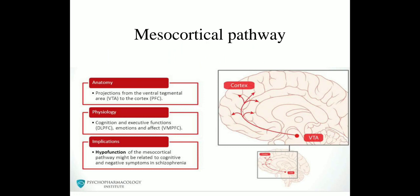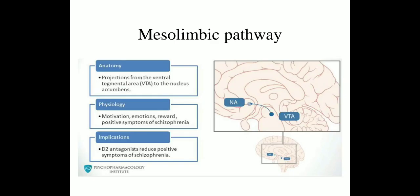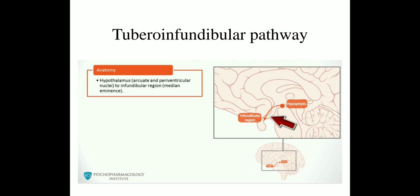Hypofunction of the mesocortical pathway might be related to cognitive and negative symptoms in schizophrenia. Then, the mesolimbic pathway is projected from the VTA to the nucleus accumbens. It is responsible for motivation, emotion, rewards, and the positive symptoms of schizophrenia. D2 antagonists reduce positive symptoms of schizophrenia. The last one is the tubero-infundibular pathway, projected from the hypothalamus to the infundibular region.